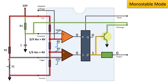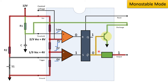With switch S1 closed, the negative terminal gets 0V and the positive terminal gets 4V. As a result, the output of the trigger comparator changes from 0 to 1. This sets the flip-flop output to 1 and 0. So Q-bar at 0 will turn off the discharging transistor.